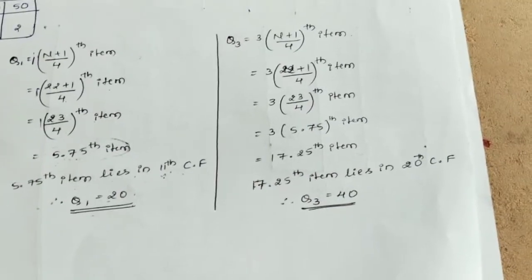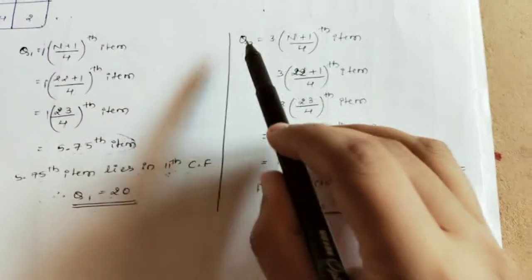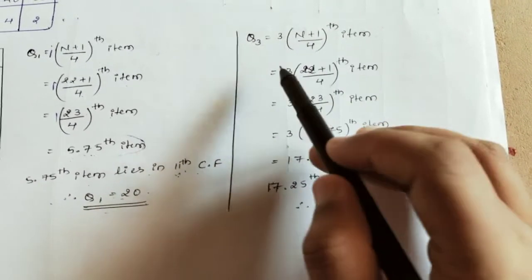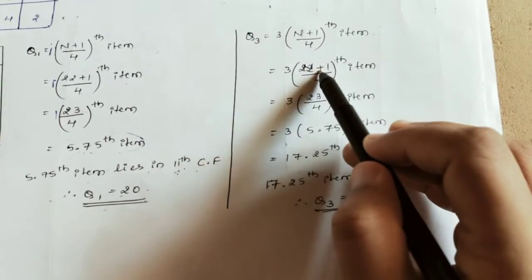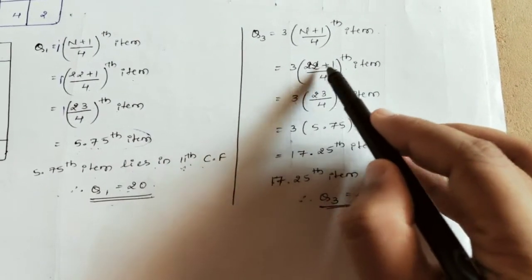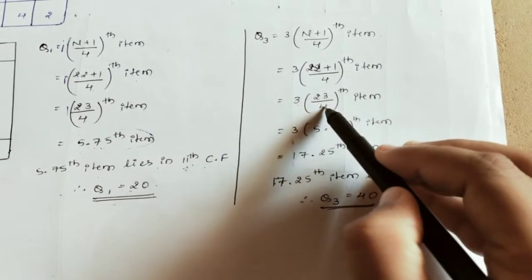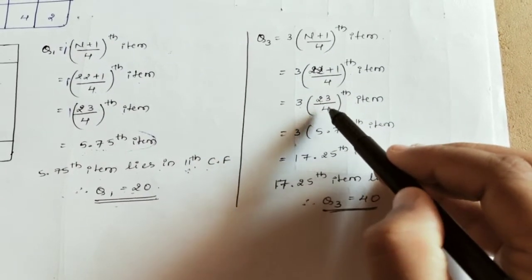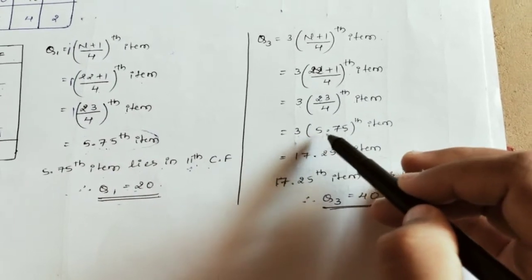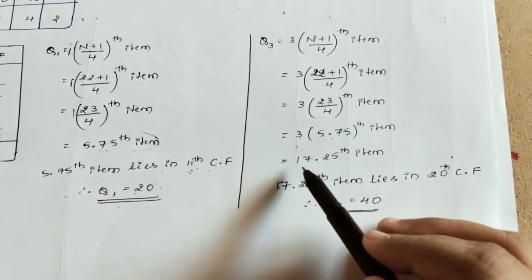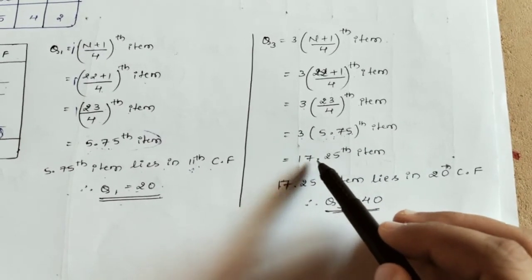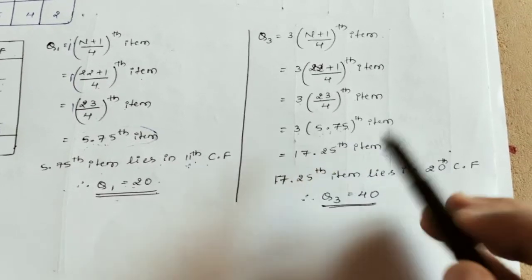Now for Q3, we use the formula: 3 into n plus 1 divided by 4th item. So 3 into 22 plus 1 divided by 4 equals 3 into 23 divided by 4. This gives us 17.25th item.